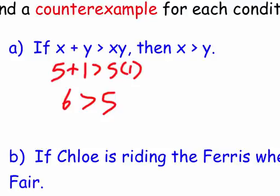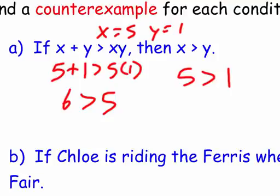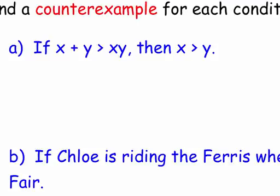So that's really 6 is greater than 5. That works. Well, I said x was 5 and y was 1. 5 is greater than 1. So those are both true. So that doesn't work. So let's get rid of that. Well, what else can I do? Can I bring in some negatives here?